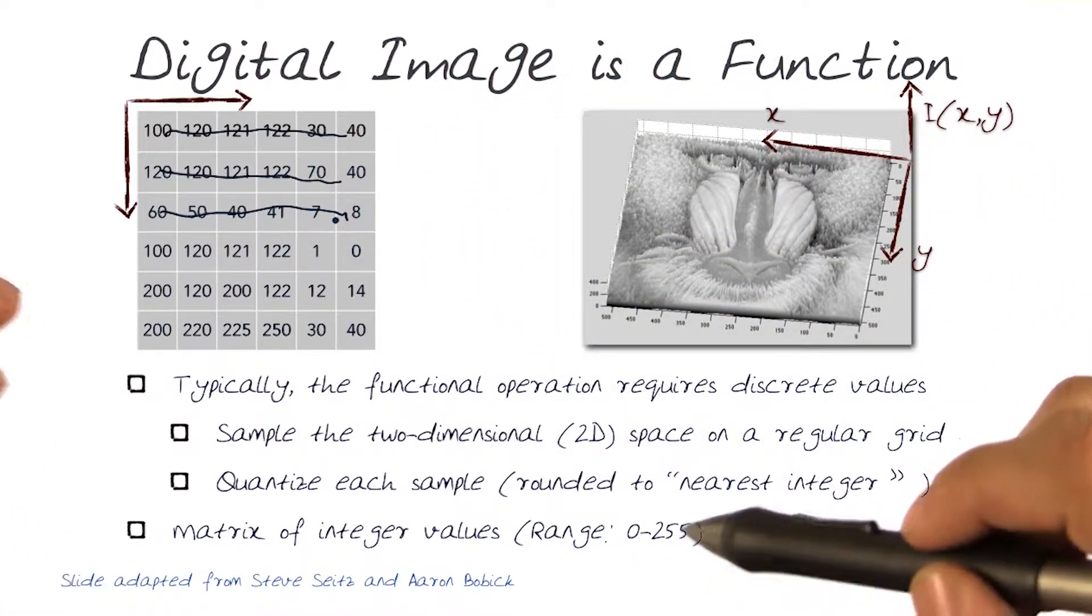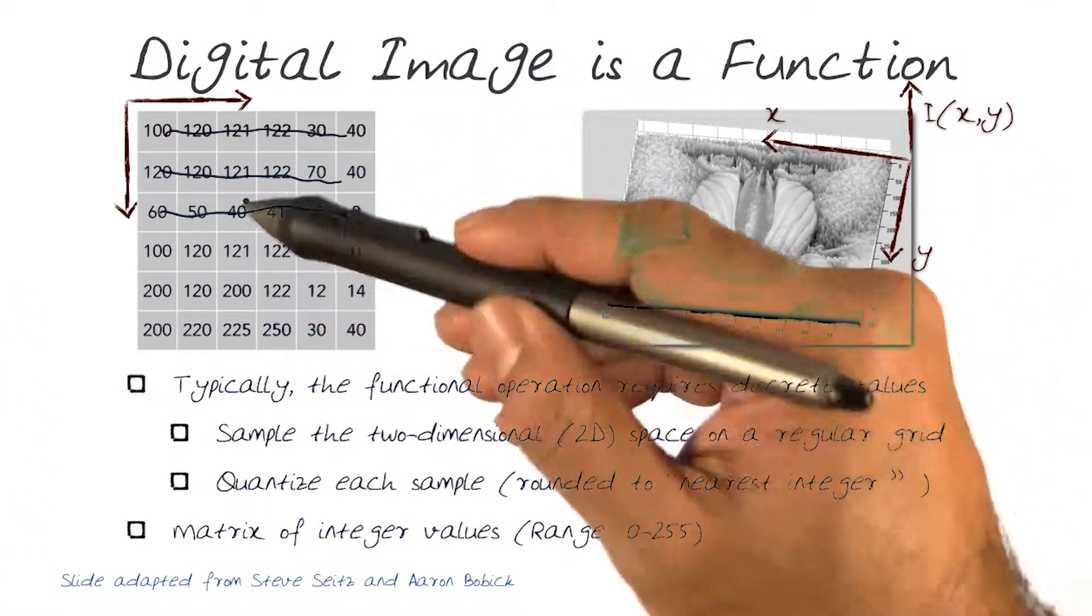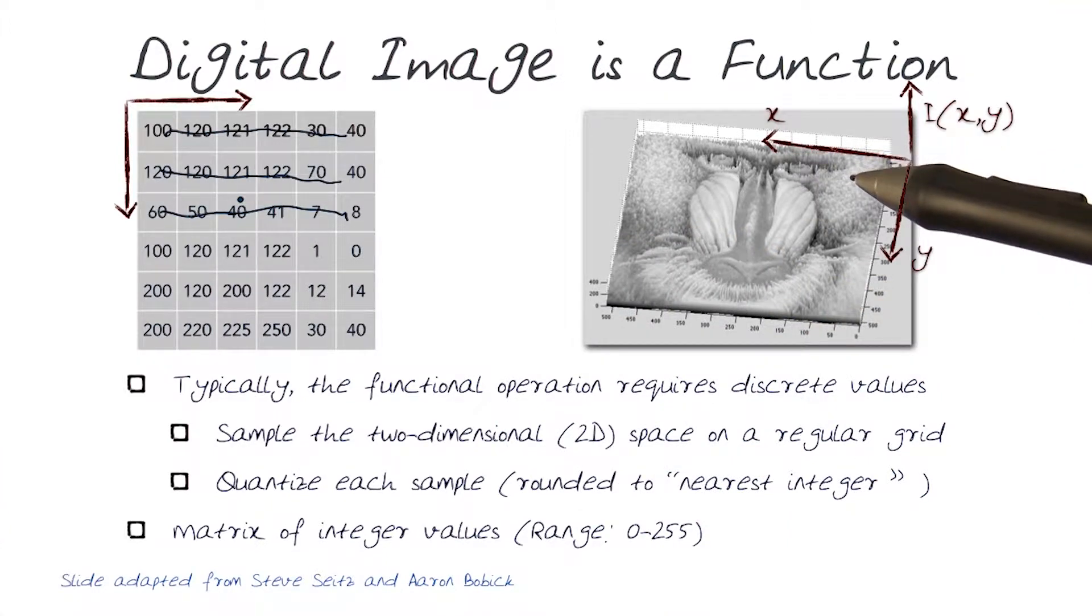And basically, in essence, what it means is now we have a matrix, just like I showed before, of integer values varying from 0 to 255.